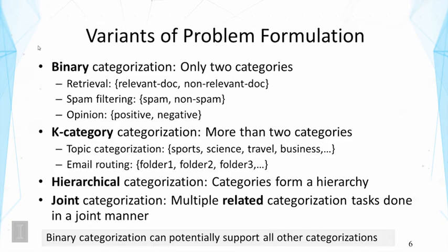There are also many variants of the problem formulation. The simplest case is binary categorization, where there are only two categories — for example, distinguishing relevant from non-relevant documents in search engines, spam from non-spam, or positive from negative opinions. A more general case is k-category categorization, with more than two categories, such as topic categorization with multiple topics or email routing to multiple people or folders.